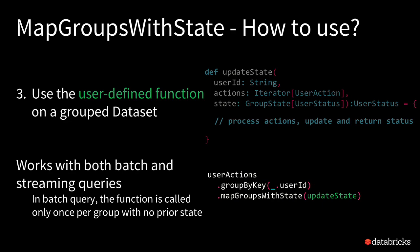You take this function and apply it on a grouped data frame: take the user action data frame, group by the key which is user ID, and apply this function with mapGroupWithState. This operation works just like all other data frame operations — it works on both batch and streaming data. In streaming, the system figures out how to keep and version the state. In batch, it boils down to a simple groupByKey map groups with no prior state, processing the entire data in a single batch.